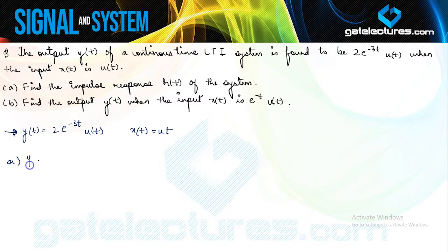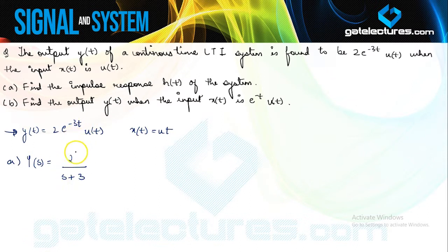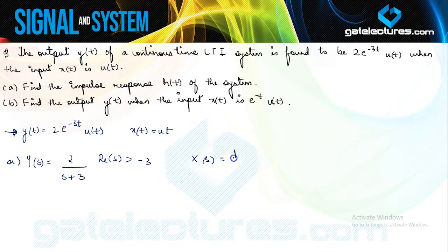For that I need to transform both the output and the input into the s-domain. When you perform the Laplace transformation of the output you are going to get 2/(s+3). Since this involves multiplication with e^(-3t), using properties of the Laplace transform, the ROC is going to be Re(s) > -3. If you do the same with the input signal x(t) = u(t), you are going to get 1/s and the ROC is going to be Re(s) > 0.